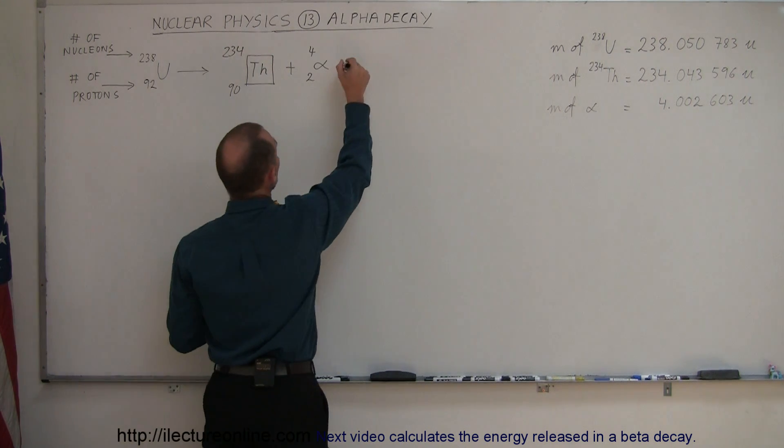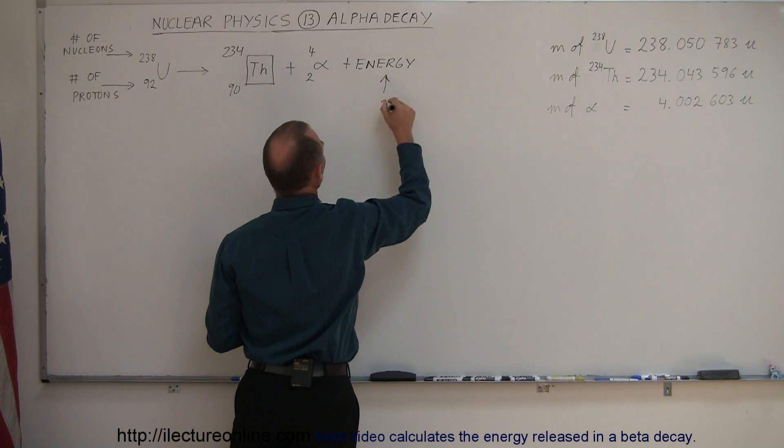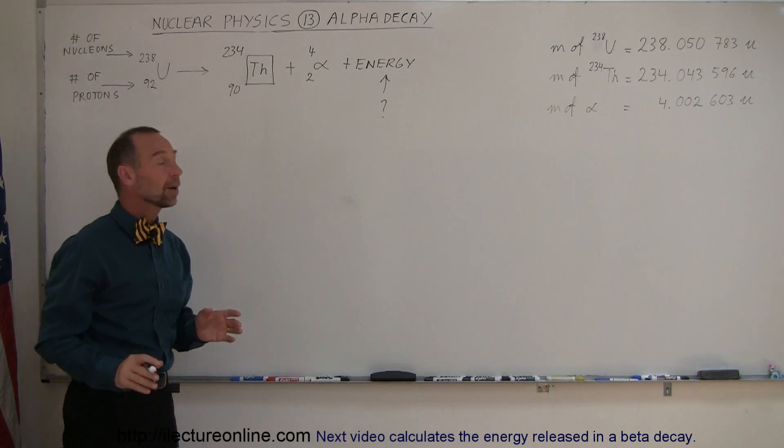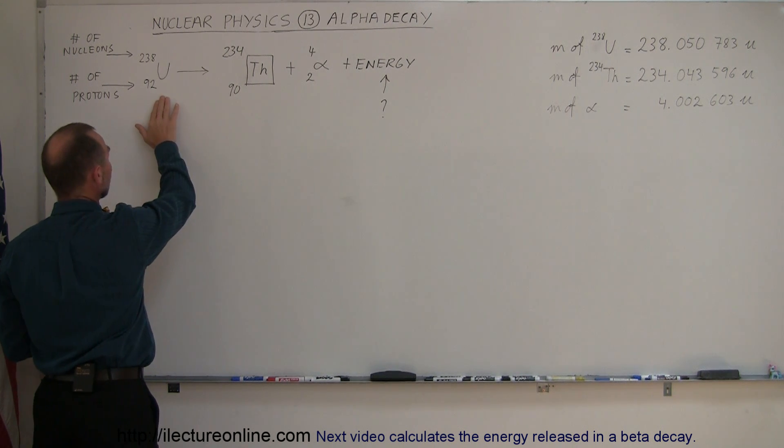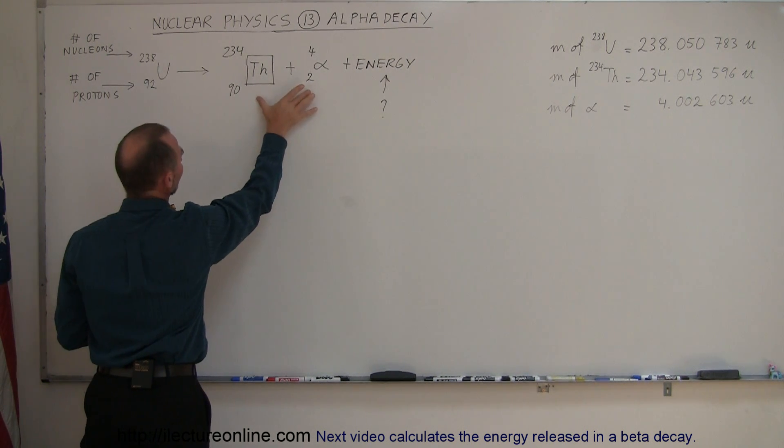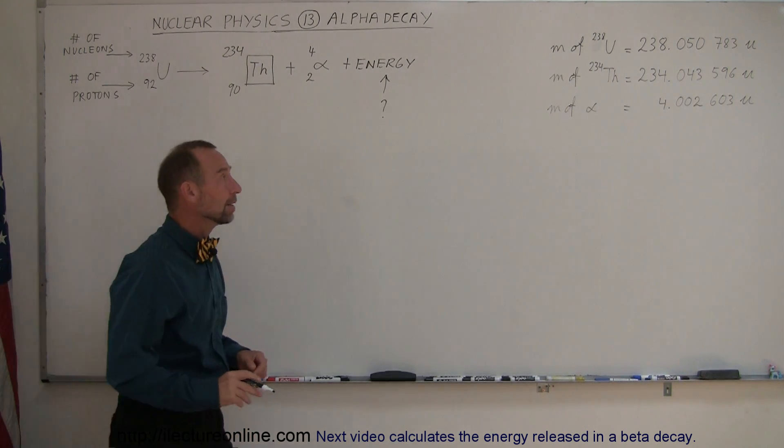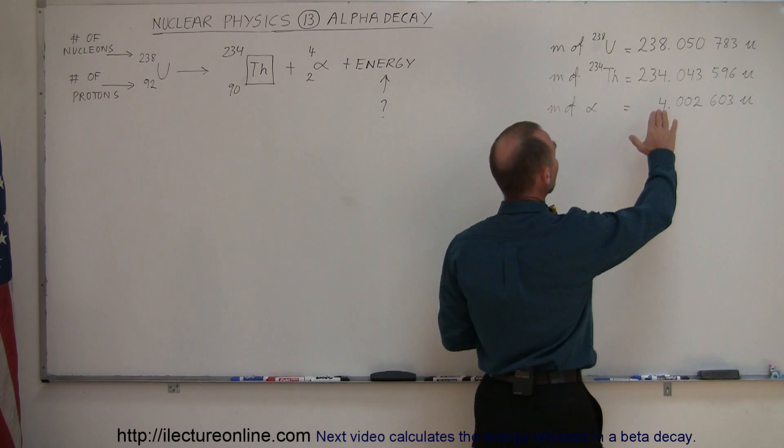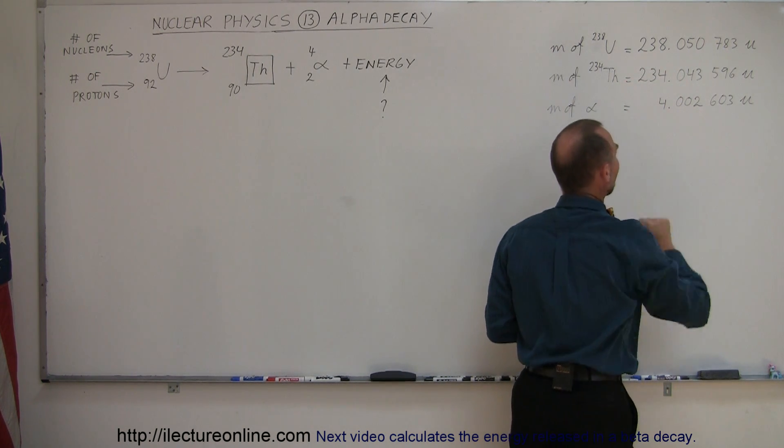And of course, in addition to that, a certain amount of energy is being released. The question is, how much energy is released? And well, that comes from the difference in the mass of the initial nucleus, which is uranium-238, and the sum of the two masses here, making up the thorium and the alpha particle. So to the right here, I have written down the atomic mass of the uranium-238, of the thorium-234, and of an alpha particle.